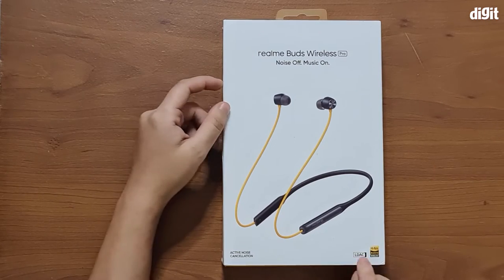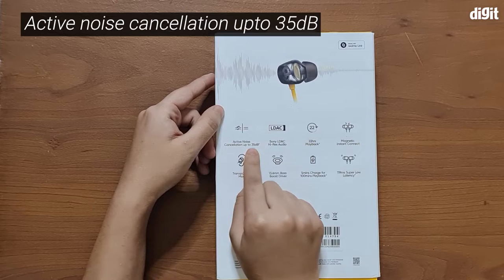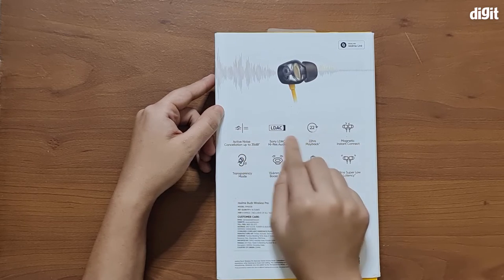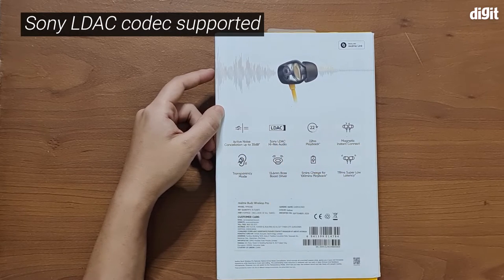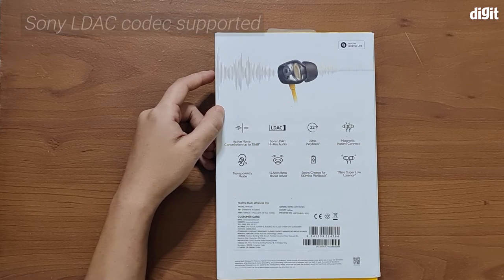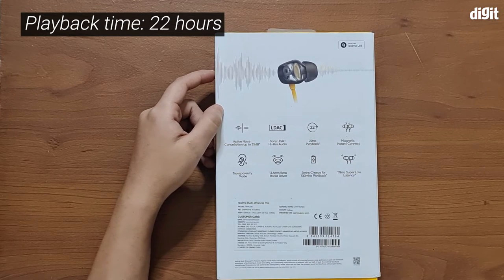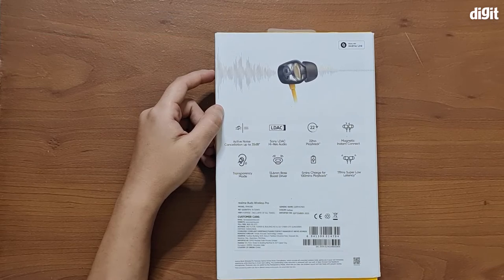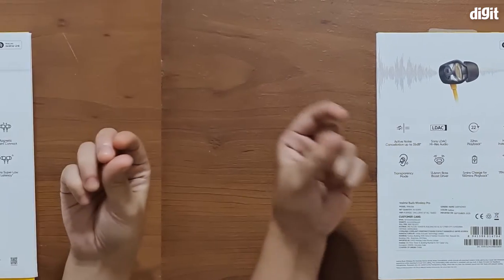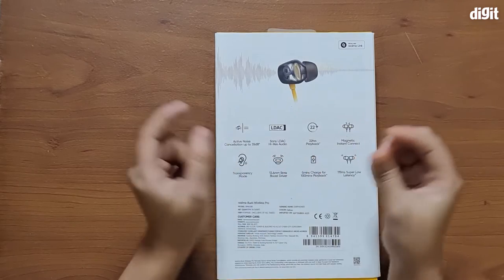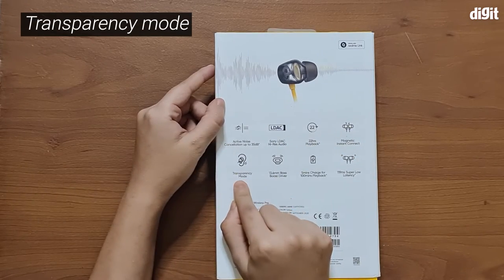At the back of the box, you can see it has active noise cancellation up to 35 dB. It comes with Sony LDAC high-res audio codec support. It has 22 hours of battery playback, which is pretty sizable for neckband style earphones. It comes with magnetic instant connect, so when you magnetically connect the earphones it turns off, and when you separate them it turns on. It also comes with transparency mode, which heightens the ambient sounds and lets you be more aware of your surroundings.